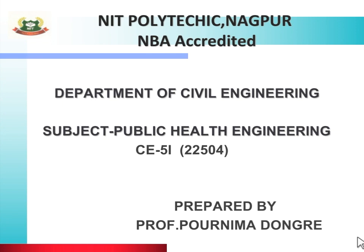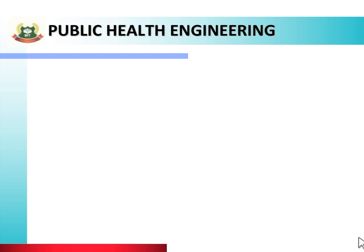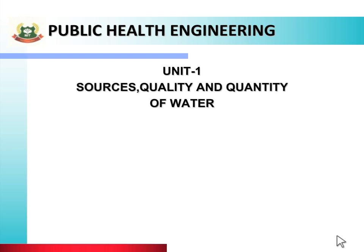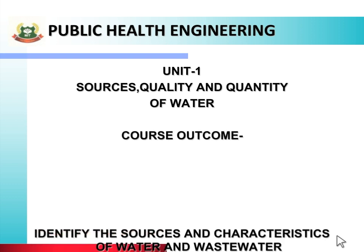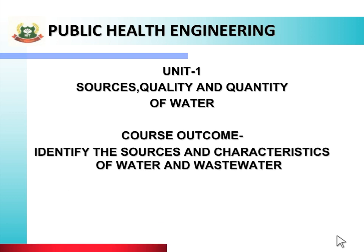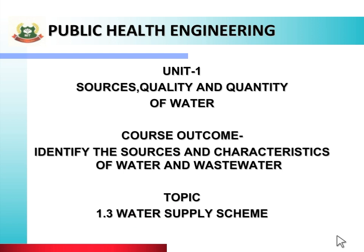Hello students, welcome to this online class of the civil engineering department from NIT Polytechnic Nagpur. I am Purnima Dongre, subject teacher of public health engineering. The unit name is sources, quality and quantity of water. The course outcome is to identify the sources and characteristics of water and wastewater. Today's topic is water supply scheme.